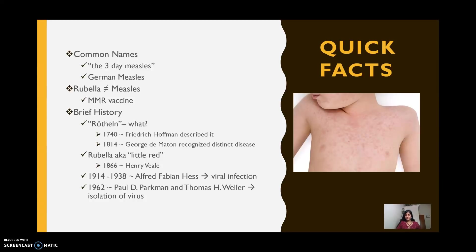So a brief history. In 1740, German physician Friedrich Hoffmann was the first one to actually describe the illness. In 1814, George de Matten was the first one to recognize the disease as distinct from both scarlet fever and measles. And because they were both German, they both referred to the illness as Rotlin.